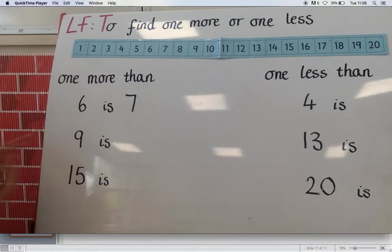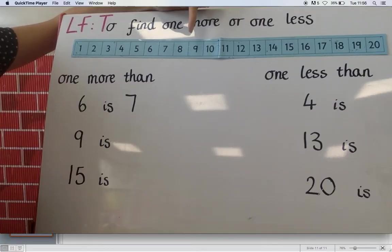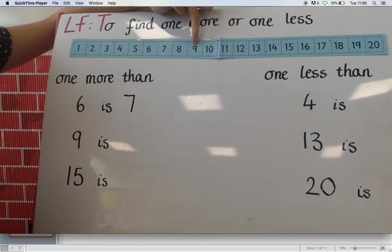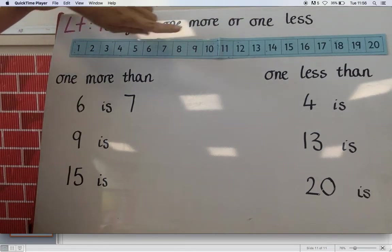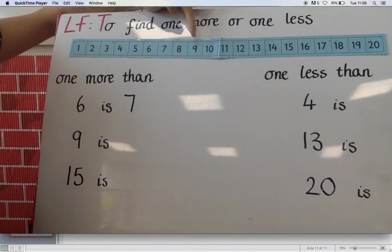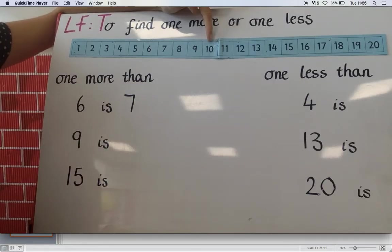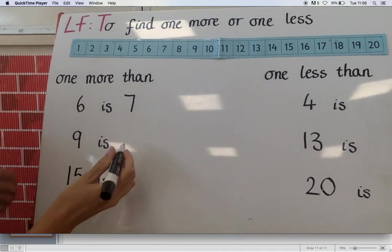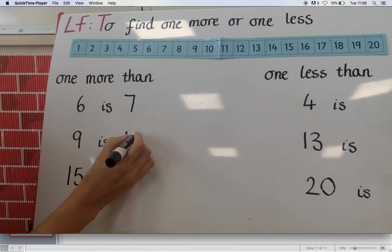Try the next one. One more than nine. So again find nine on your number line. So find the number nine. One more than nine is. And remember it's greater it's more so it's going to go this way. One jump. What's the next number? Ten. One more than nine is ten.